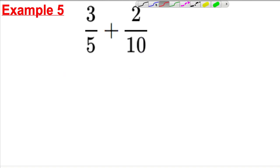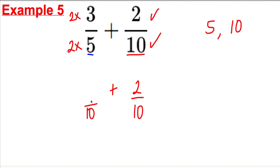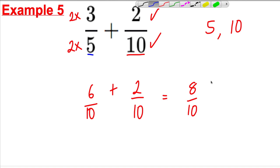Example 5: we have three fifths and two tenths. The numbers on the bottom are different, so I ask: what do 5 and 10 both divide into? They both divide into 10. This one is already over 10 so it stays as two tenths. For three fifths, multiply bottom by 2 to get 10, and do the same on top: 2 times 3 gives six tenths. So six tenths plus two tenths equals eight tenths. At the last stage, simplify: 2 divides into both 8 and 10, giving four fifths.